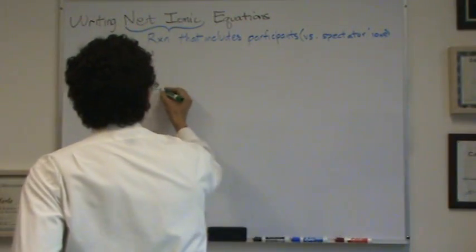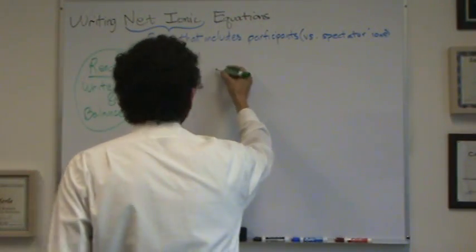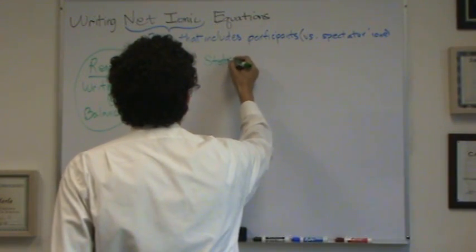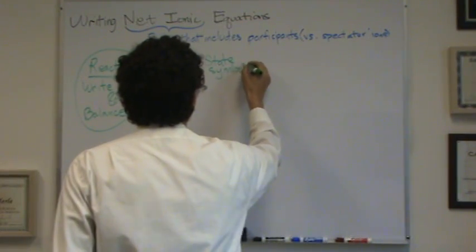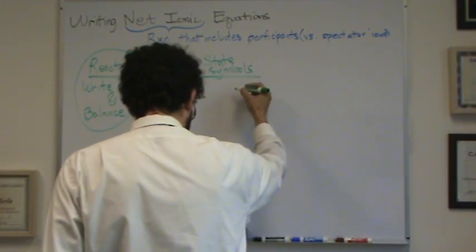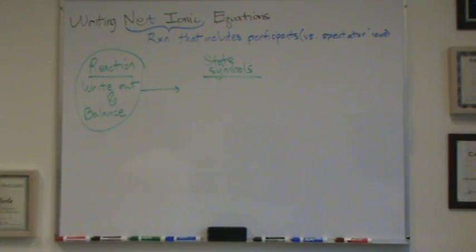This gets a little more involved. Step two has to do with state symbols. Now there's two ways to figure out the state symbols. State symbols, solid, liquid, gas, aqueous, whatever. Two ways to figure it out.